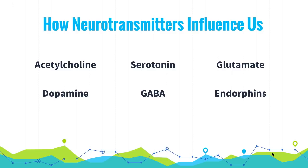Dopamine influences movement, learning, and emotion. When you have too much or too little dopamine, you can develop schizophrenia. Serotonin is one of the most important neurotransmitters, probably alongside dopamine. Serotonin affects everything from sleep to arousal to hunger to mood — a whole range of different things. An undersupply of serotonin is linked to depression.